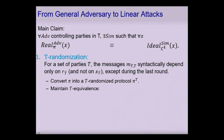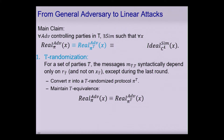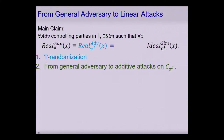You need to design T-randomized protocol pi_T while maintaining T-equivalence to the original protocol, meaning whatever the adversary achieves attacking pi, it can also achieve attacking pi_T. This is the first step. The second step happens automatically: any active adversary attacking the randomized protocol pi_T is equivalent to an additive attack on the circuit representation of pi_T, namely C_{pi_T}.